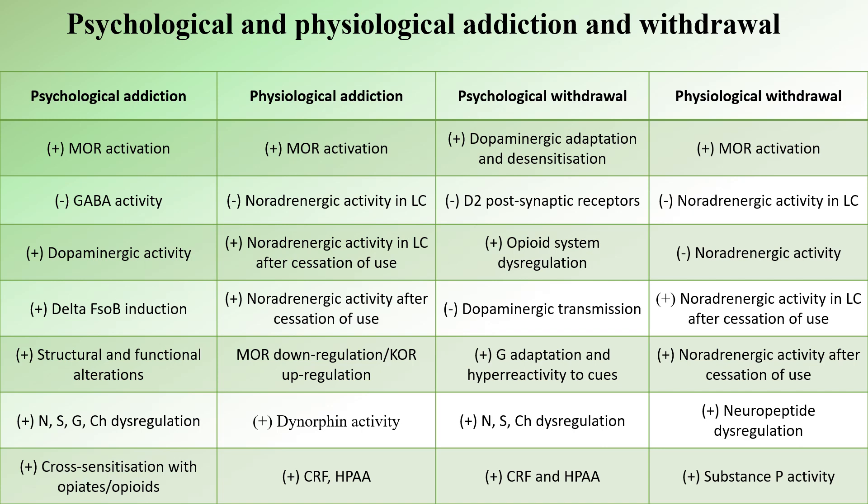The mechanism of physiological withdrawal begins with activation of mu opioid receptors due to the pharmacological action of mitragynine and 7-hydroxymitragynine, leading to decreased noradrenergic release in the locus coeruleus. After abruptly stopping Kratom use, the noradrenergic pathway becomes hyperactive, causing an uncontrolled release of noradrenaline, resulting in a hyperactive noradrenergic state. Additional systematic dysregulations contribute to physiological withdrawal symptoms, including neuropeptide dysregulation, notably an increase in substance P activity, contributing to muscle pain during initial periods of abstinence.